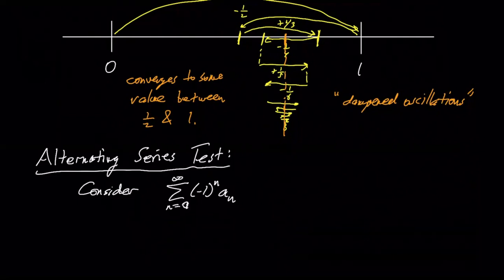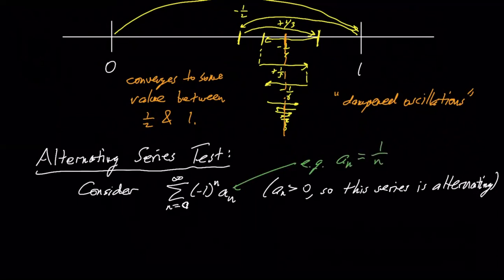So the a sub n are positive. And so this is alternating because we have the minus one to the n that makes the series alternate. But the a sub n can be thought of as the positive side. Like for example, above our a sub n was one over n, just the positive part. Okay.